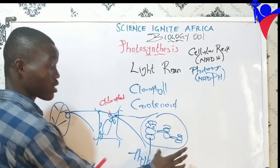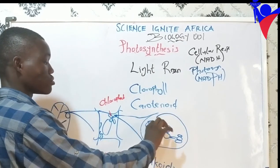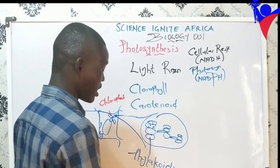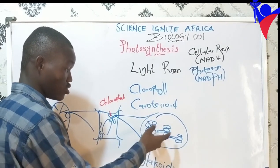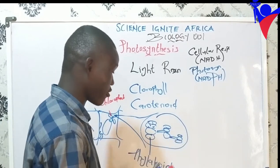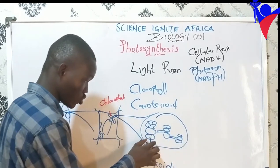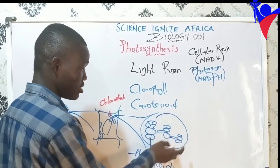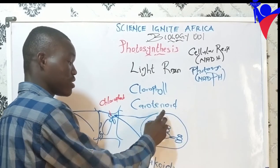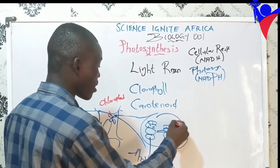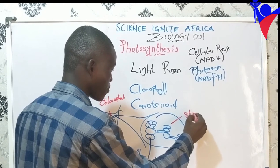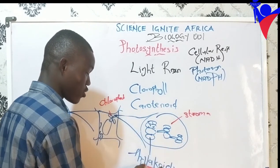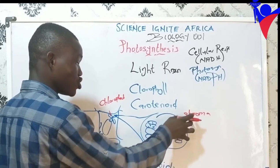These are chloroplasts. Now we have different connected structures — that structure is called the thylakoid. If you join them together, we call those grana. Just know this is called the thylakoid, and the internal space inside them is called stroma.